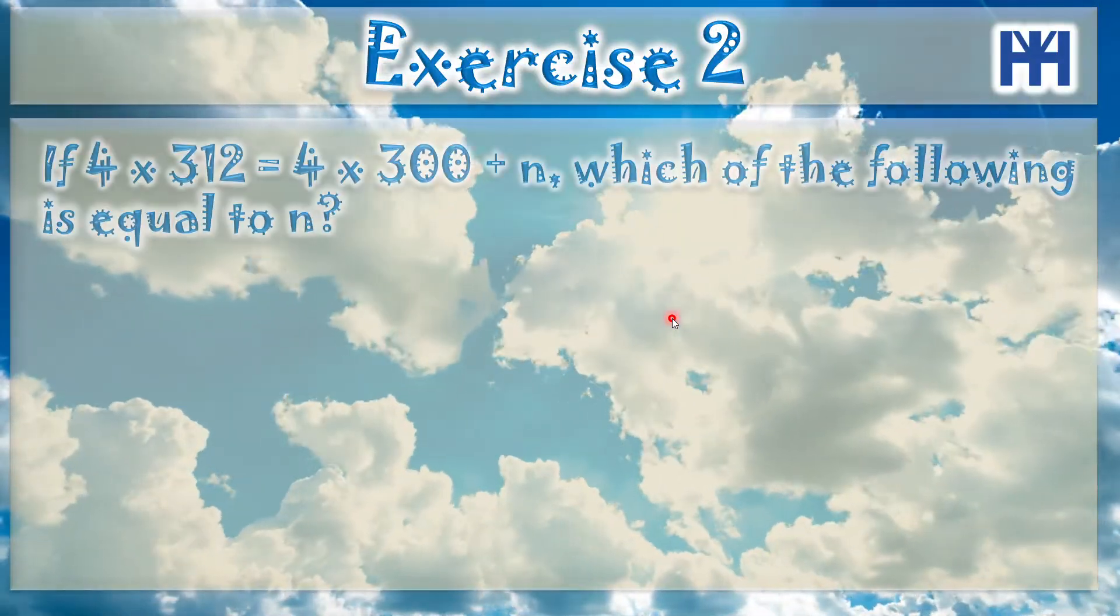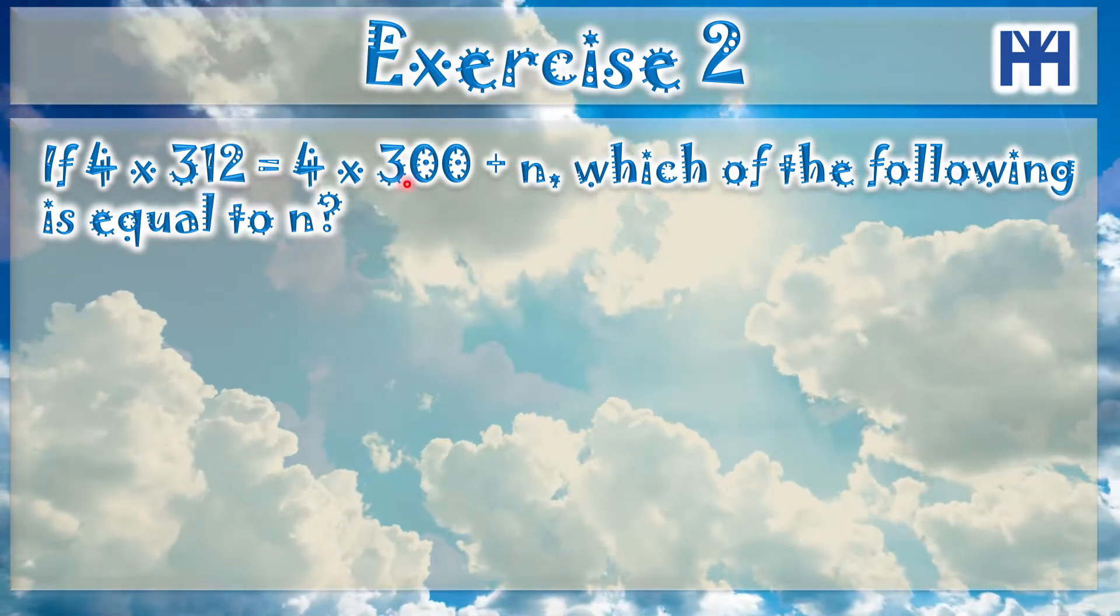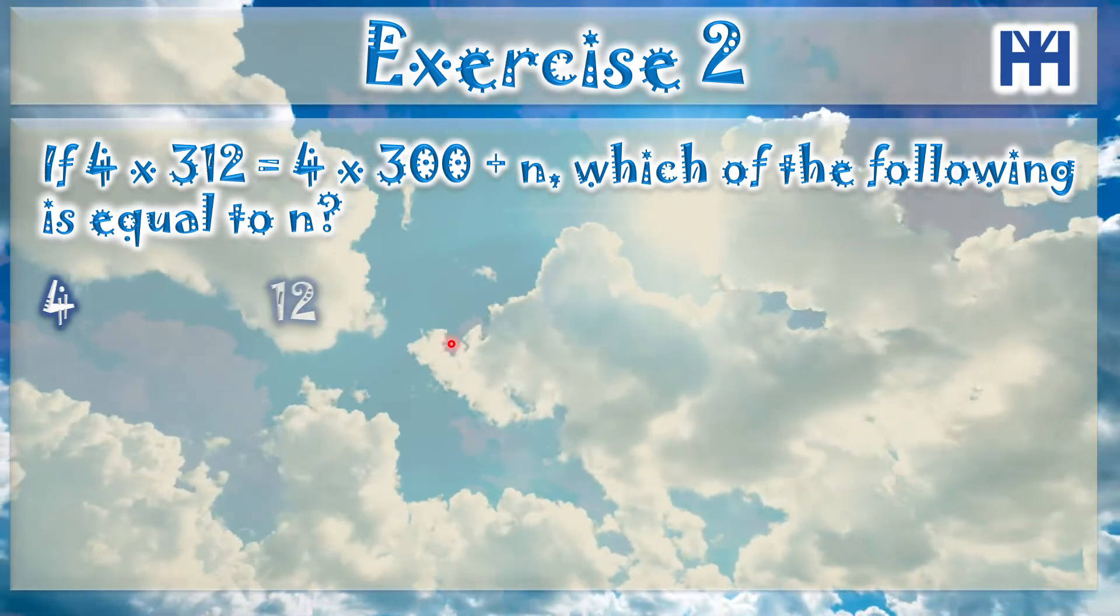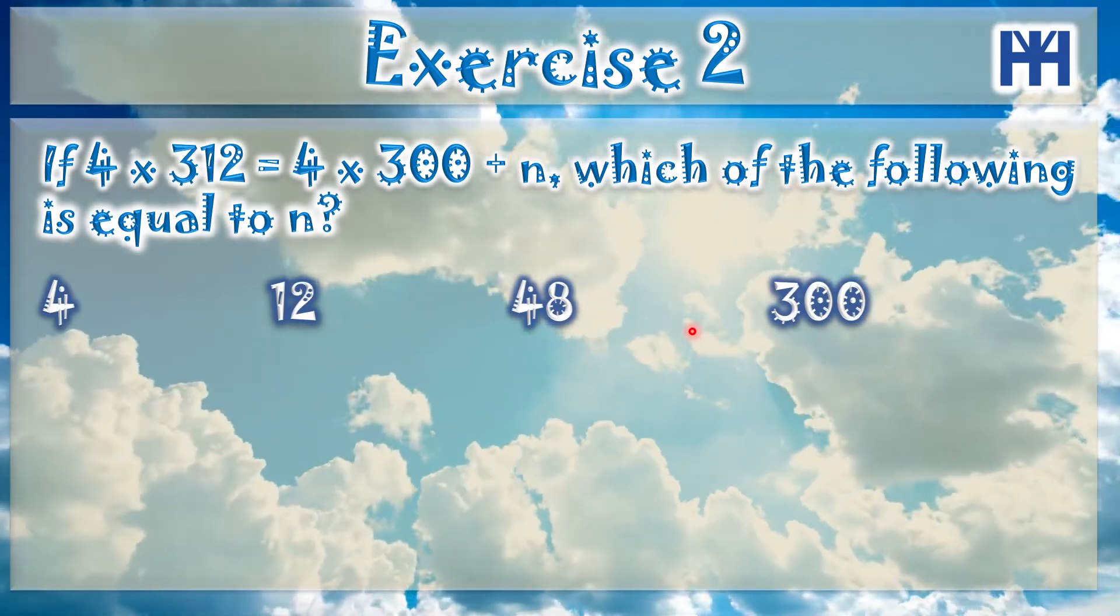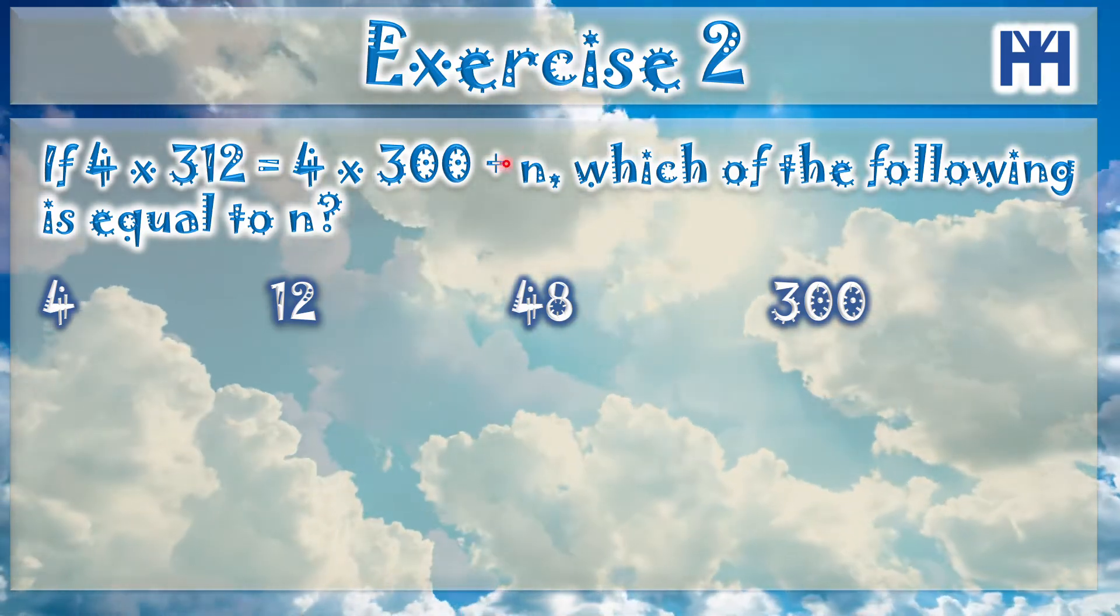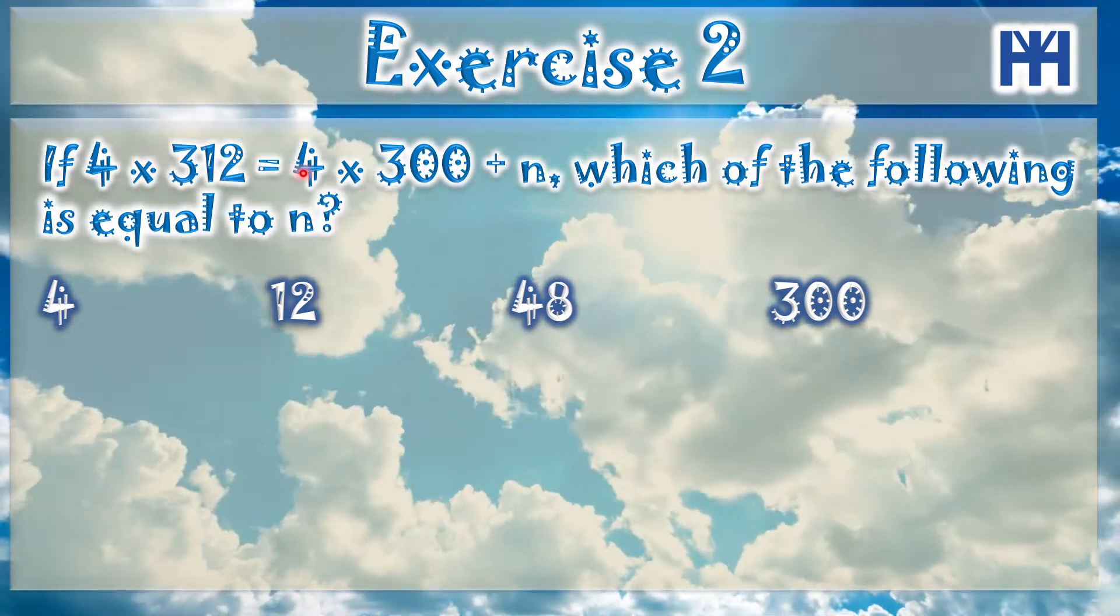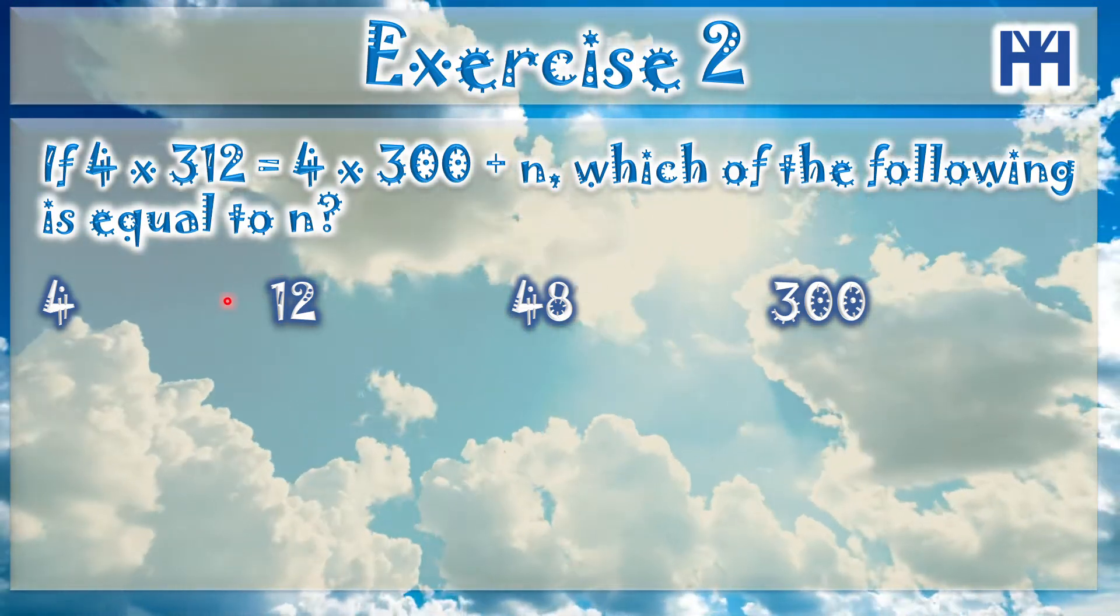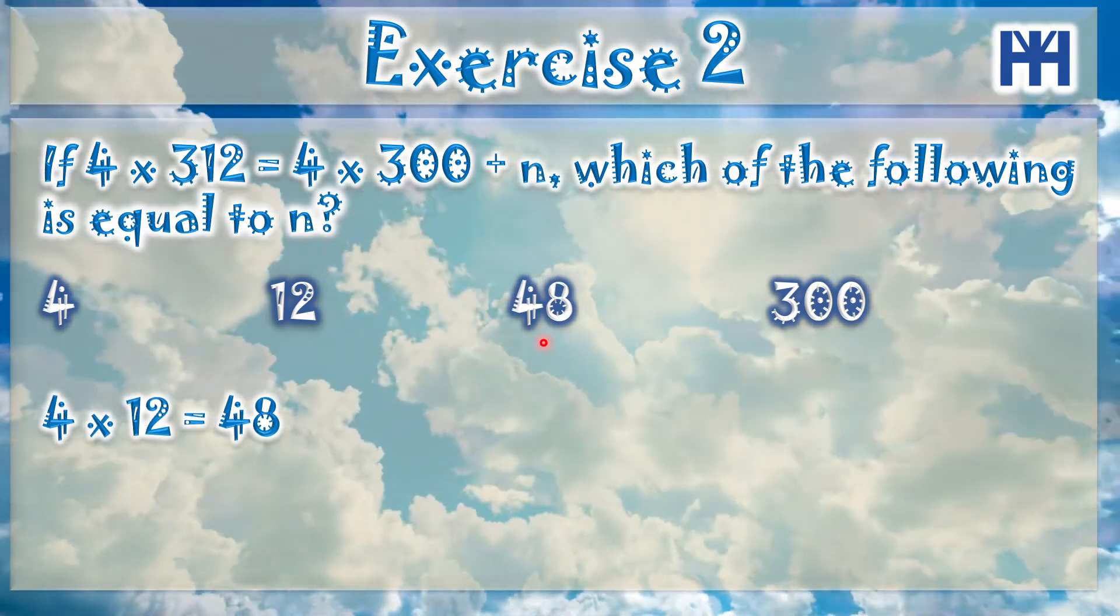Exercise 2. If 4 multiply 312 equal 4 times 300 plus n, which of the following is equal to n? 4, 12, 48, or 300? Let's see the value of n here. If 4 times 312 equal 4 times 300 plus n, of course it's 4 times 12. So 4 times 12 equal to 48, so n is equal to 48.